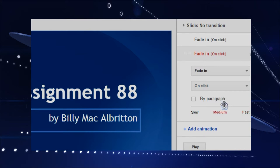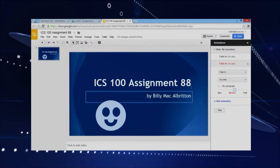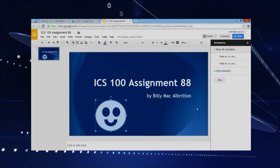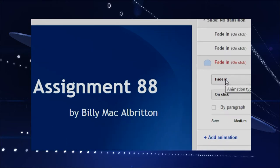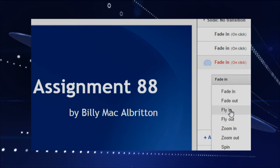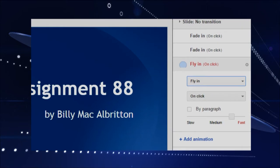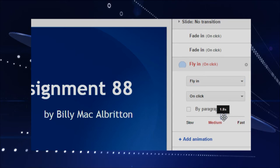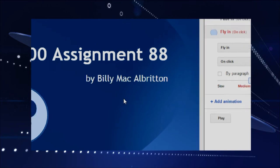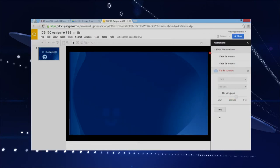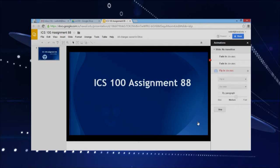Let's try another one. All we got to do is click on that text and then click over here to add animation. I'm going to stick to fading in for this one as well, and we'll do On Click at about the same speed — medium. Let me try one more: I'll click on the little face here and animate part of it, not the whole thing. For this one I'm going to switch it up — instead of fade in, we'll do fly in. We'll keep it on clicking at medium speed.